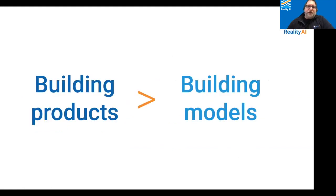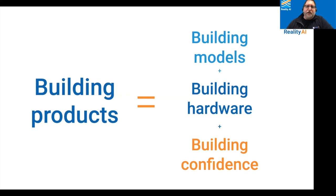So why do we do all these things? Because building products is more than just building models. Machine learning models are at the heart of all of this, but if you're going to build a product, it's not just about the model. It's also about the hardware and instrumentation that provides the data those models use, and about building confidence. Unlike a project at my desktop, if it's a product, I need to convince a lot of other people that this is going to work and is worth deploying — operations, engineering, marketing, and of course the executives who control the budget. I'm going to show you how you can use TinyML skills and TinyML models to support all three aspects of product building today.